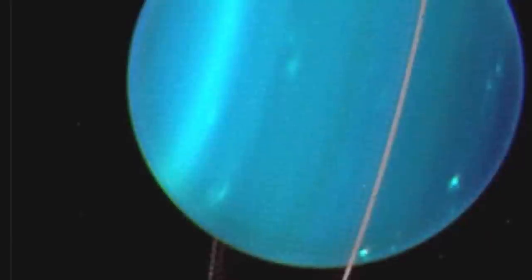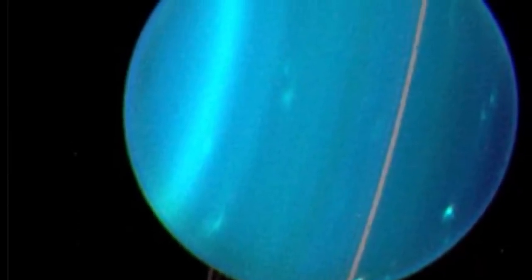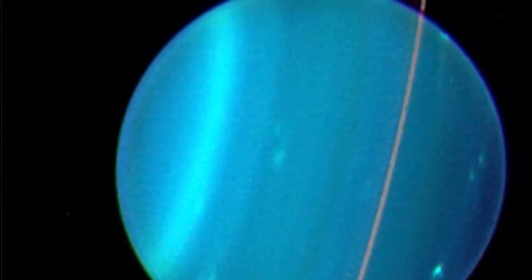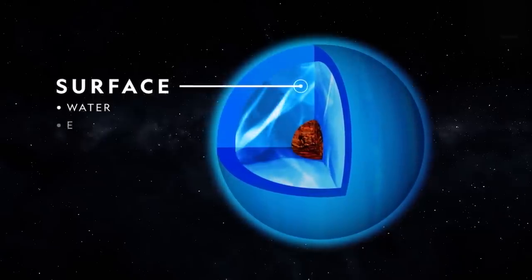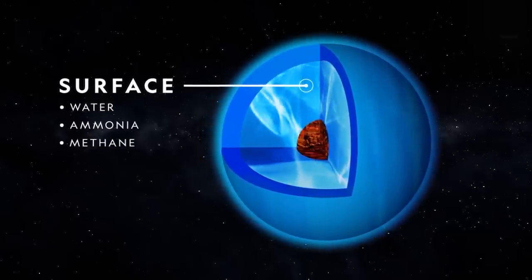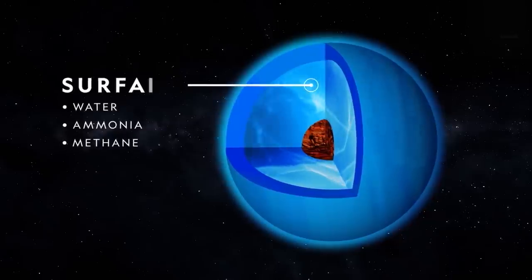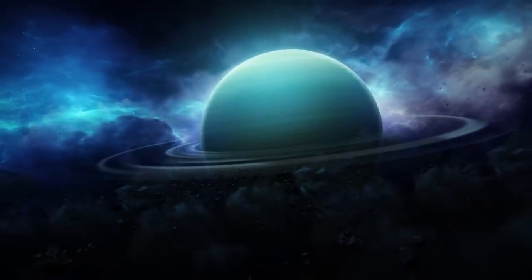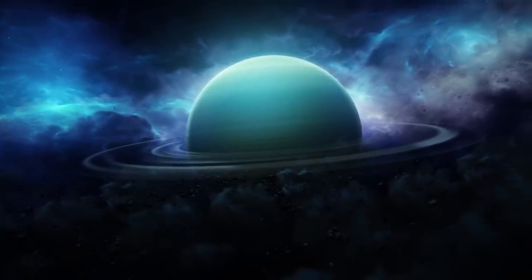Virtually invisible to the naked eye because it has only a very faint glow, Uranus has only been discovered in modern times. It is considered, with Neptune, as a giant ice planet because it is composed of volatiles such as water, methane, and ammonia. Materials called ice in astrophysics, whatever their state.